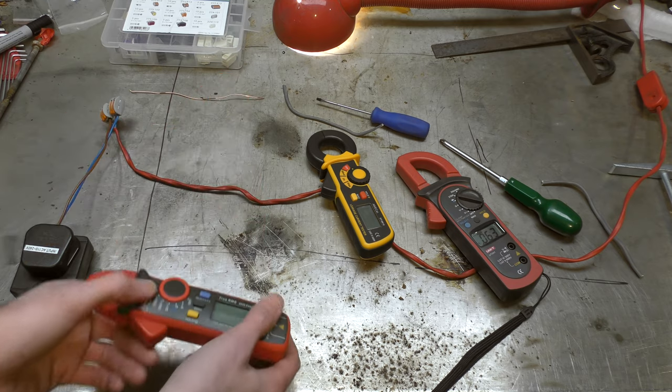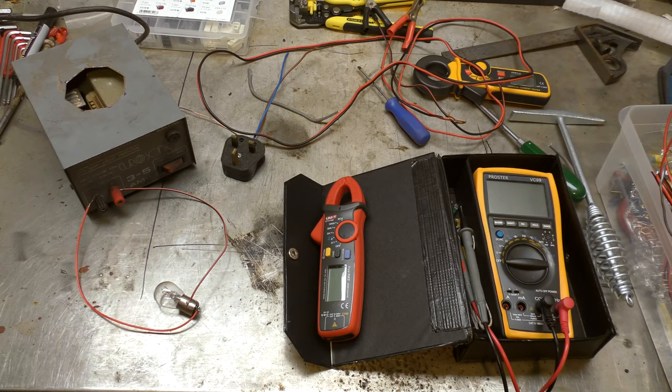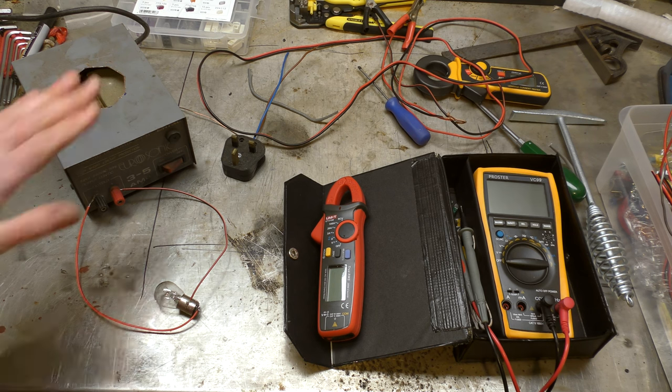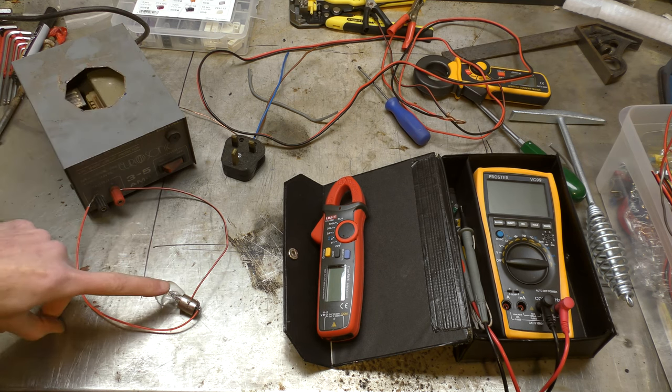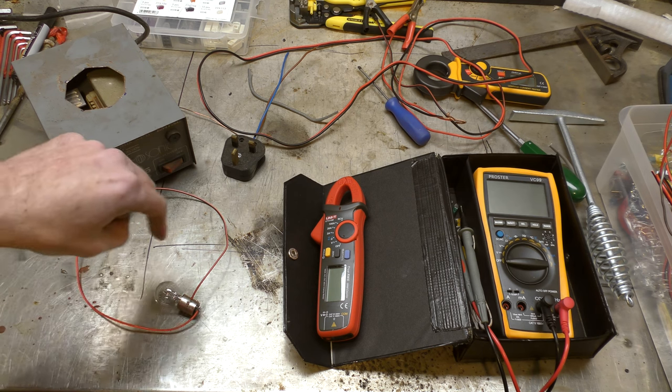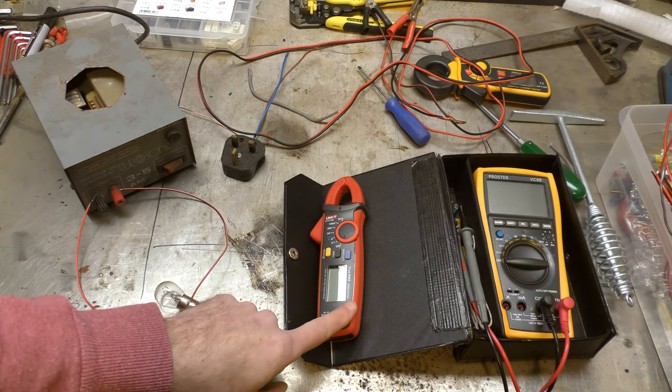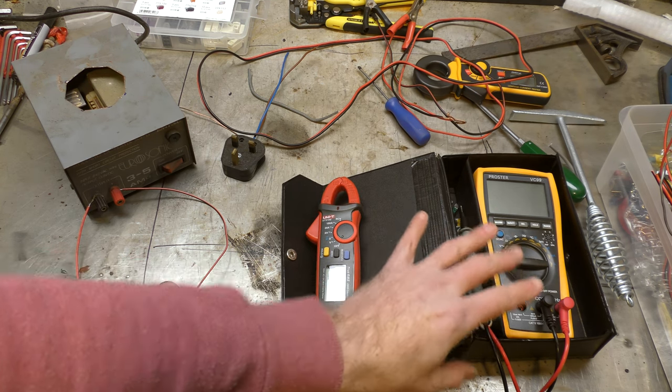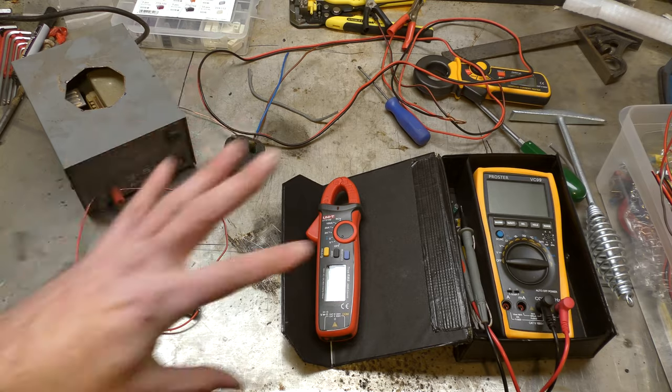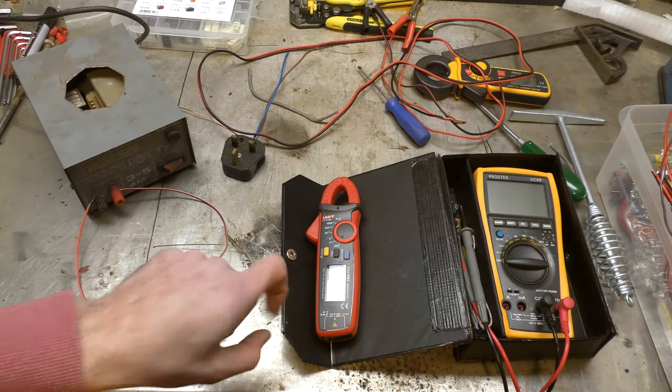Alright, next up, a DC test. Here's our DC test bed setup. Power supply, a load which we'll be using a 12 volt bulb, two bits of wire, our DC current clamp, and our voltmeter and ohmmeter that we're gonna use. We're gonna use maths to work out how accurate that is. So we'll turn this on.